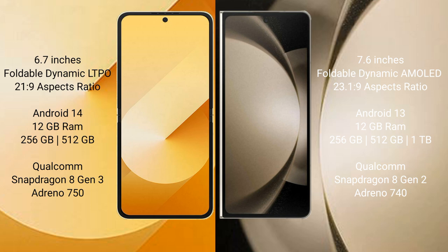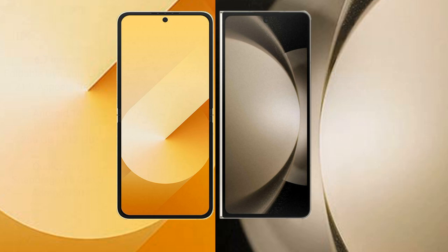The Samsung Galaxy Z Flip 6 comes with 12GB RAM, 256GB or 512GB internal storage, a Qualcomm Snapdragon 8 Gen 3 processor, and Adreno 730 GPU. The Samsung Galaxy Z Fold 5 comes with 12GB RAM, 256GB, 512GB, or 1TB internal storage, a Qualcomm Snapdragon 8 Gen 2 processor, and Adreno 740 GPU.